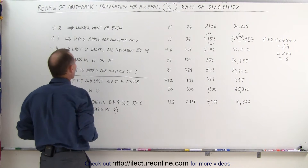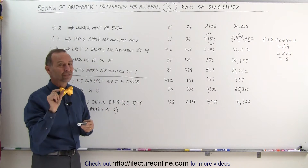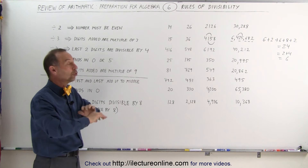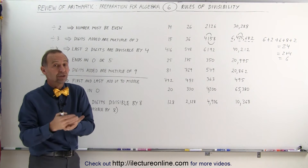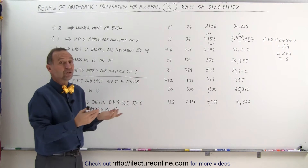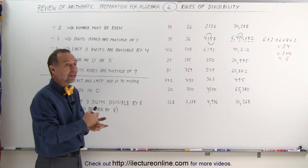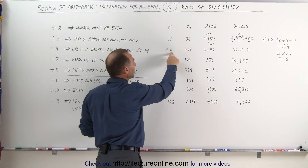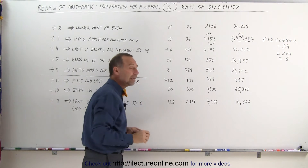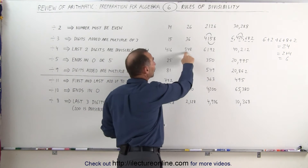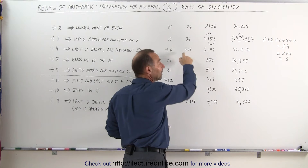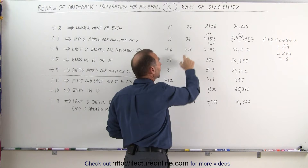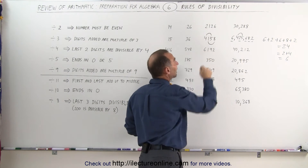How about divisibility by 4? All we have to do is look at the last two digits. If the last two digits of the number are divisible by 4, the whole number is divisible by 4, because 100 is divisible by 4 — 100 divided by 4 is 25. So any number that is 100 or bigger, all we have to do is look at the last two digits. 16 can be divided by 4, so 416 is divisible by 4. 48 is divisible by 4, because 40 divided by 4 is 10 and 8 divided by 4 is 2, so 548 can be divided by 4.